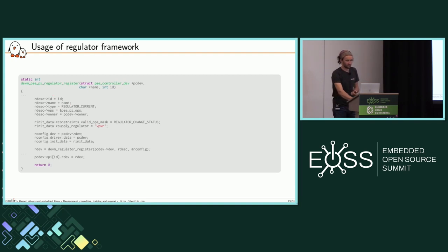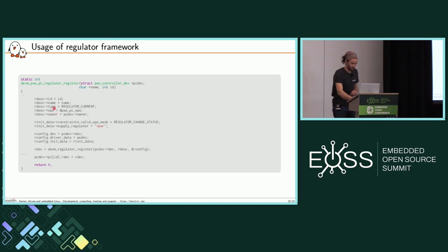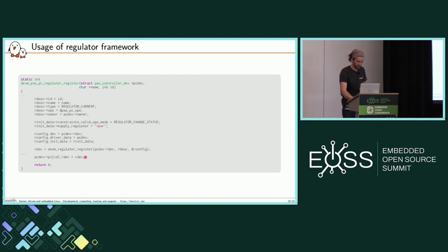Here is some code showing how we register the regulator. One regulator is registered for every power interface of the PoE. It's a regular voltage regulator — we set the basic regulator information to make it work, then register it and put it in the PSE PI structure.